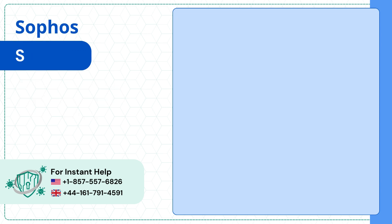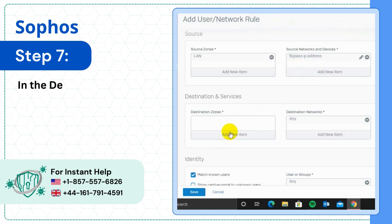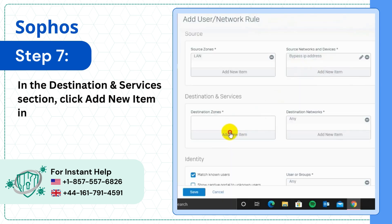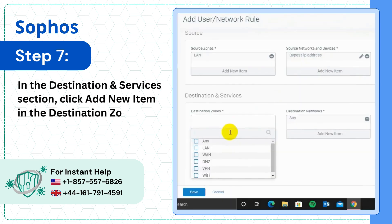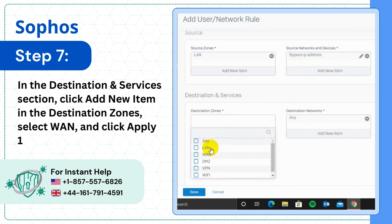Step 7: In the Destination and Services section, click Add New Item. In the Destination Zone, select WAN and click Apply One Selected Items.